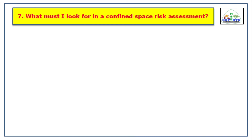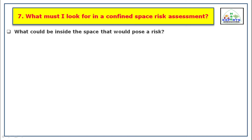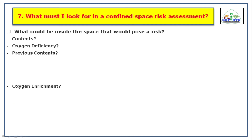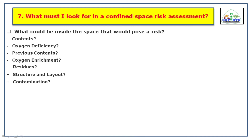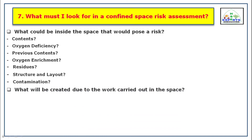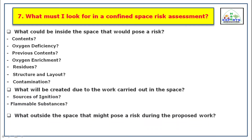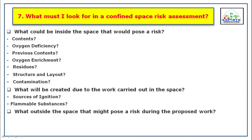What must you look for in a confined space risk assessment? When carrying out a risk assessment it is important to ensure that all risks associated with the hazards are evaluated and controlled. The following questions should be asked: What could be inside the space that would pose a risk? — considering contents, oxygen deficiency, previous contents, oxygen enrichment, residues, structure and layout, and contamination. What will be created due to the work carried out in the space? — sources of ignition, flammable substances. What outside the space might pose a risk during the proposed work? — inadequate isolation, inadvertent operation of plant, and nearby work activities.